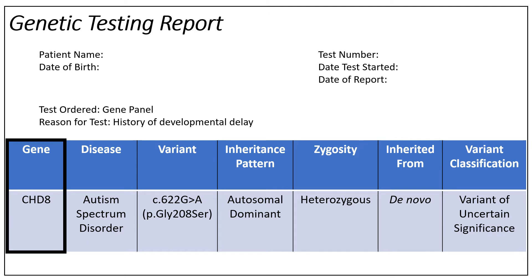First, the report indicates which gene the genetic variant was found in. You can see that this individual has a variant in the CHD8 gene. Our genes provide instructions for proteins that tell our bodies how to grow, develop, and function, similar to an instruction manual. Each protein has a different role in the body.